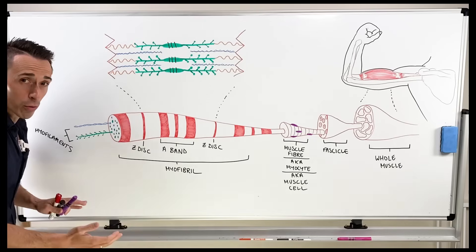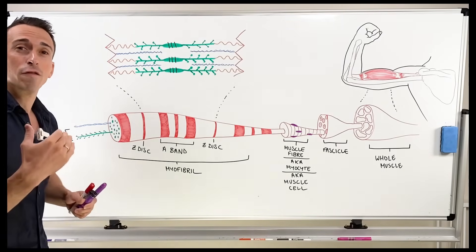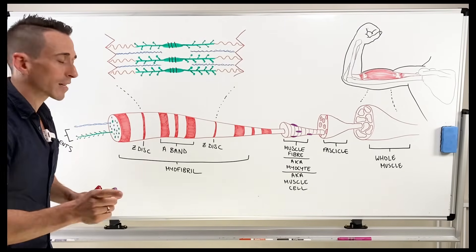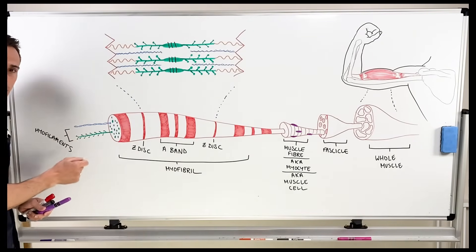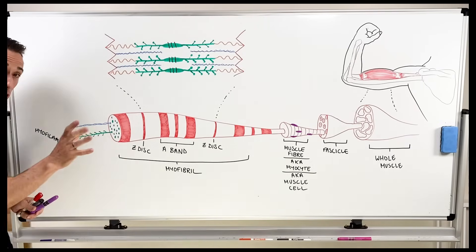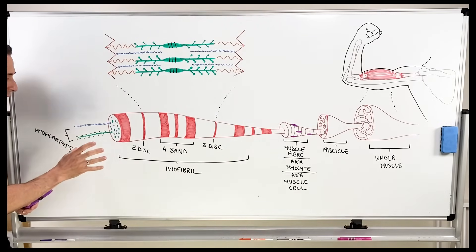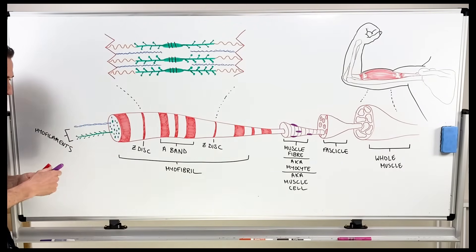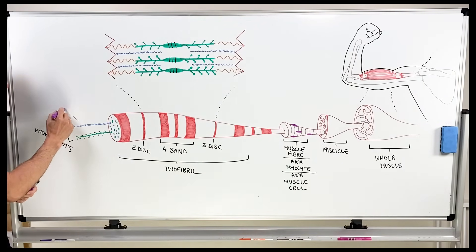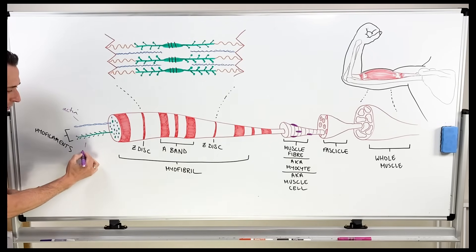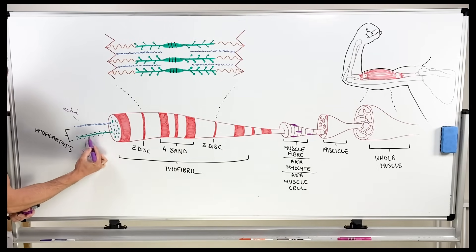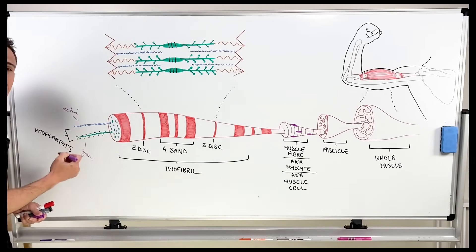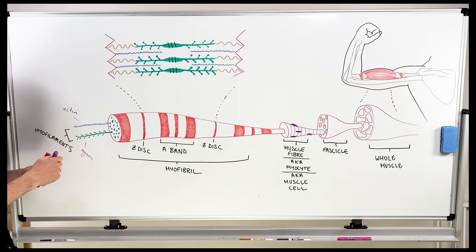The myofibrils are made up of myofilaments, and these are the contractile proteins that you can see here. The myofilaments — the contractile proteins — are actin and myosin. This one here is actin and this one here is myosin. Importantly, myosin is the thick contractile protein and actin is the thin contractile protein.